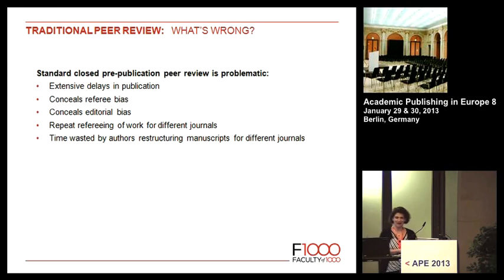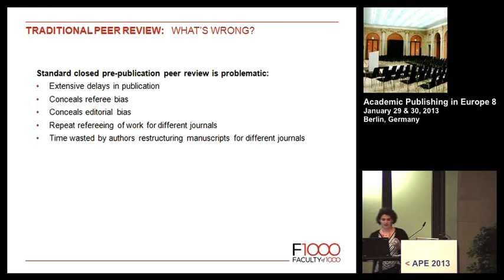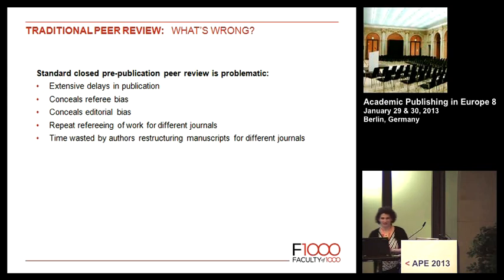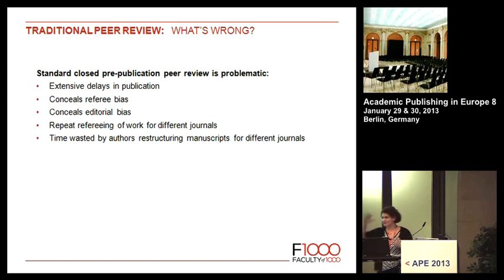So, traditional peer review — what's wrong with it? I could spend all of my 15 minutes talking about this. I'm sure you're all familiar with the issues that have been raised over many years. Specifically because it's a closed peer review process happening pre-publication, there are extensive delays — typically at least several months, sometimes even years — between when somebody's ready to publish and when people actually get to benefit. A lot of this is because peer reviewers are often competitors who want to hold things up so their own work comes out first, or authors go from journal to journal after rejection, which adds to the time.